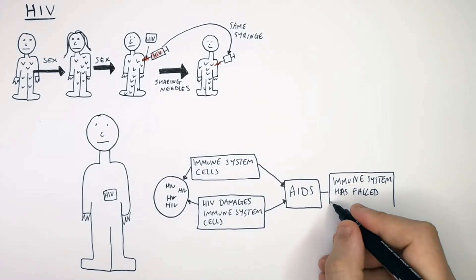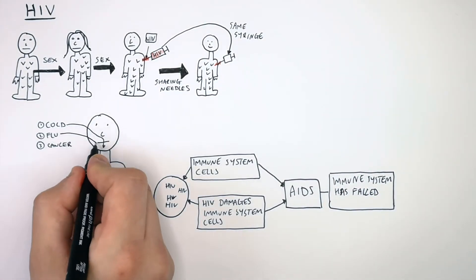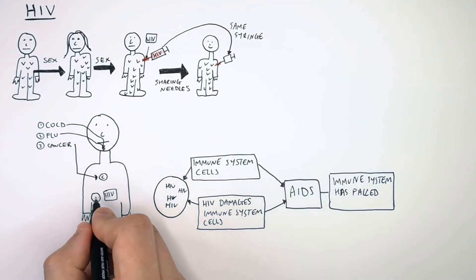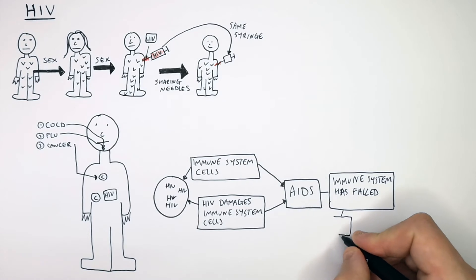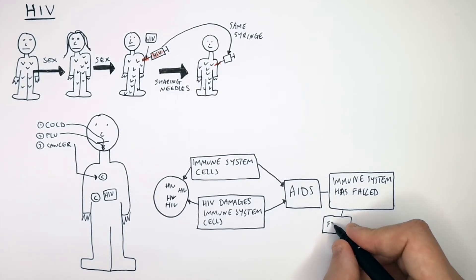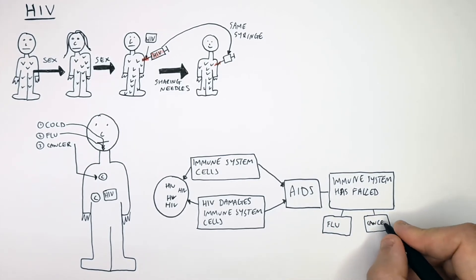So that means if they get a cold, if they get the flu, pneumonia or cancer, their body will not be able to defend itself against these illnesses. So they're more likely to die. So once you've got AIDS, which means your immune system has failed, if you get the flu or cancer, that means you're most likely to die from this illness.